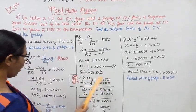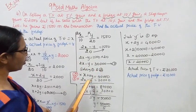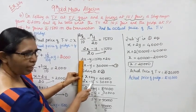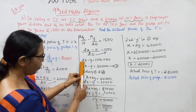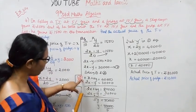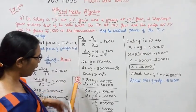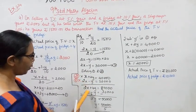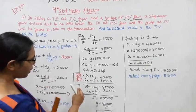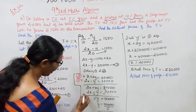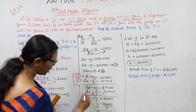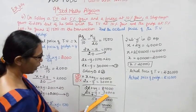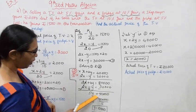First equation: X plus 2Y equals 40,000. Multiply the first equation by 2: 2X plus 4Y equals 80,000. Second equation: 2X minus Y equals 30,000. Subtracting, the 2X terms cancel. 4Y plus Y gives 5Y.